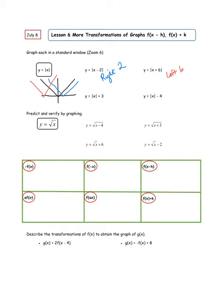For the next one, I'm going to put the plus 3 outside. Go to y2, delete that, type in the absolute value of x, get outside of that, and then do plus 3. On the TI-84, hit the right arrow to get out of the absolute value before you put the plus 3. What I see this time is a graph that's way up here — it went up 3. Then putting a minus 4 at the end — I think it's going to go down 4. And did it? Yes, it did — down 4.